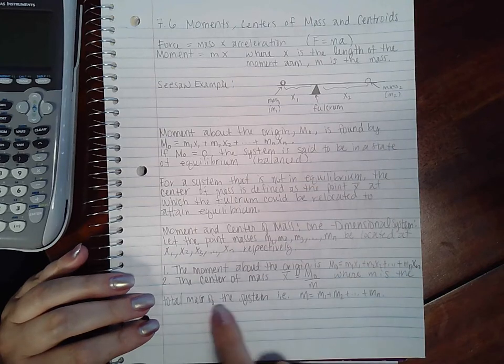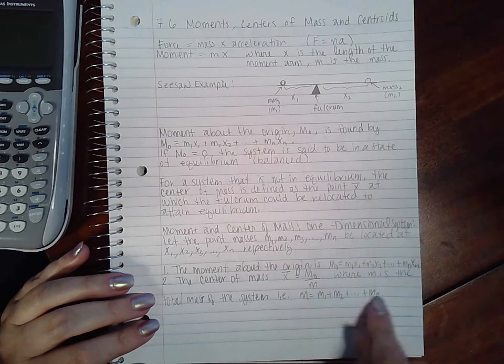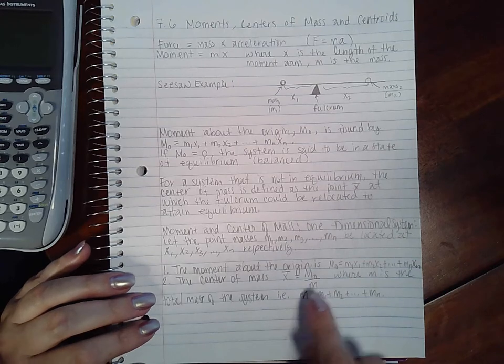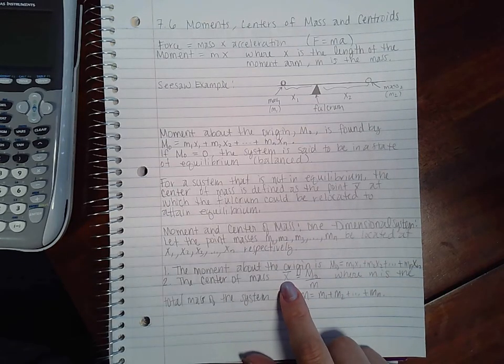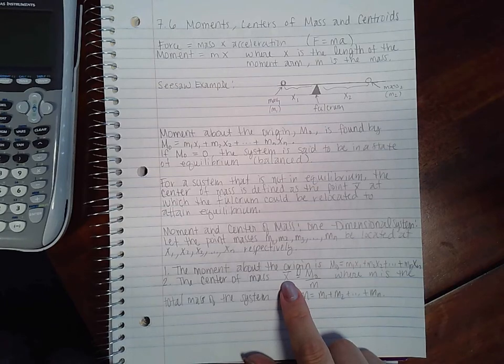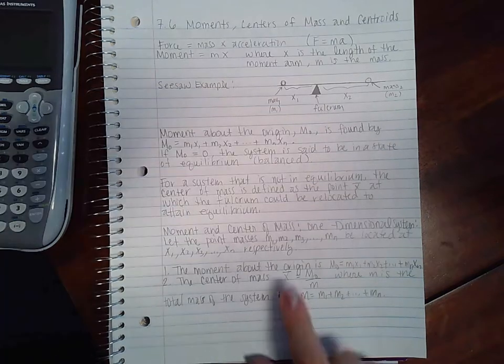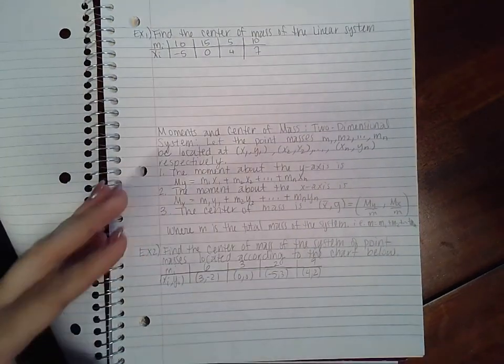The center of mass is taking that m sub zero and dividing it by m, where m is the total mass of the system. If you can figure out this ratio, you will know where the fulcrum needs to be located to create a state of equilibrium.